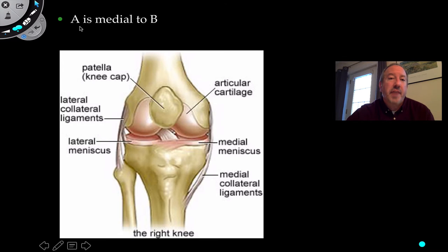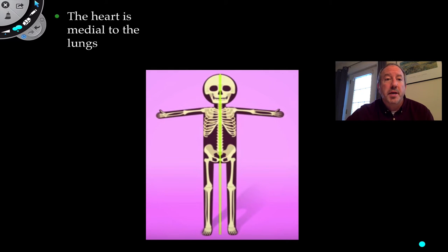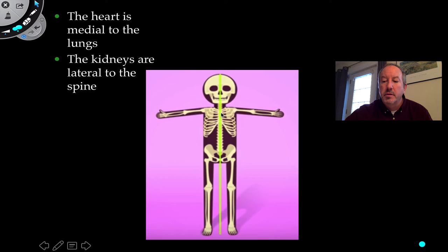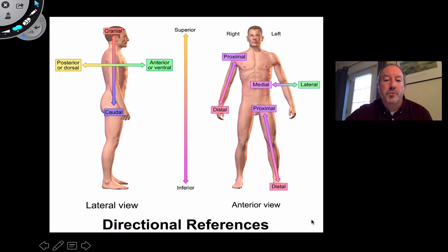One way to think about it: if A is medial to B, then B must be lateral to A. The heart, located in the center near the midline, is medial to the lungs, which are lateral on both sides. The kidneys are located lateral to the spine, and there are two kidneys both lateral to the spine. So medial is close to the midline and lateral is to the side.